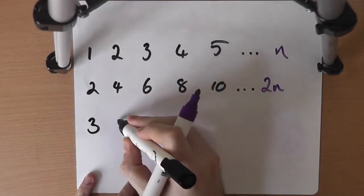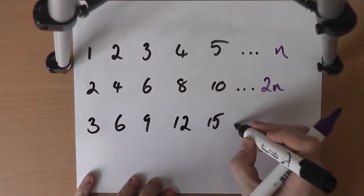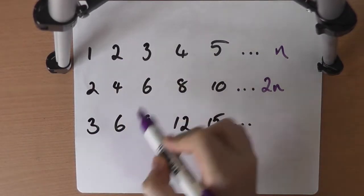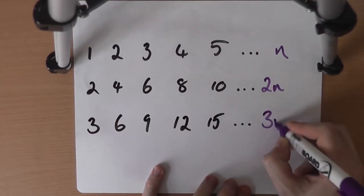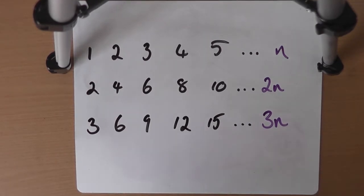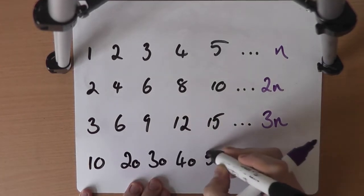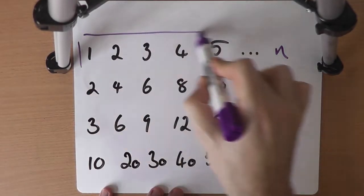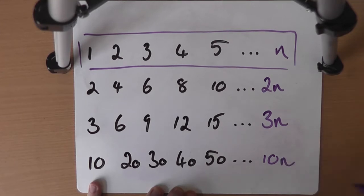If we think about the next one: 3, 6, 9, 12, 15 — the 3 times table. Comparing to the original sequence: 1 to 3, 2 to 6, 3 to 9, 4 to 12, 5 to 15. Each time the number in the new sequence is 3 times as big, which means we can give it the algebra rule 3n. If we skipped a few and thought about 10, 20, 30, 40, 50 — compared to the original sequence, the number in the new sequence is 10 times as big. So our algebra rule would be 10n.